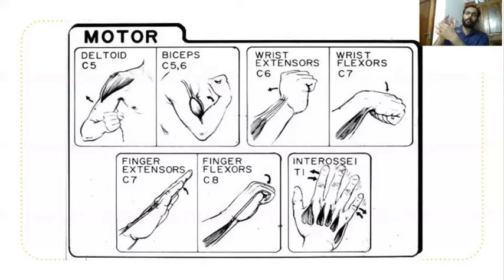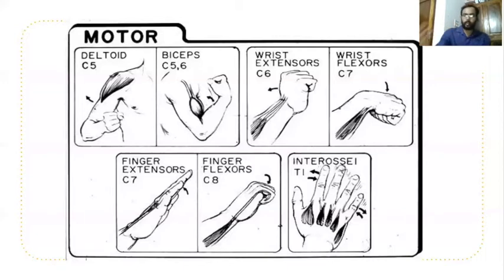For T1 innervation, ask the patient to hold the fingers together while we perform adduction, then ask the patient to do finger abduction against resistance. Conversely, the patient does abduction while the examiner does adduction of the fingers against resistance. This checks the intrinsic muscles for T1.